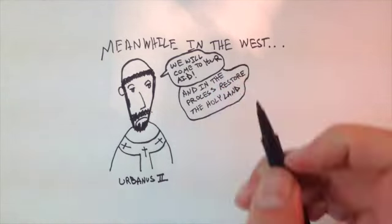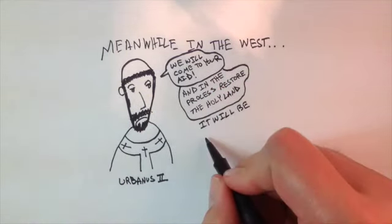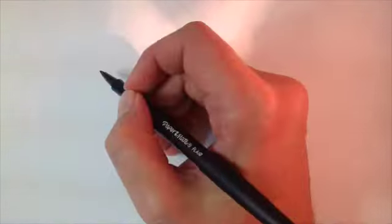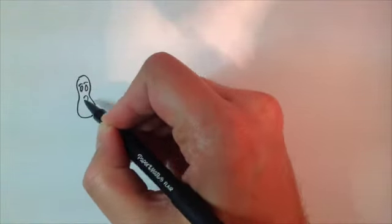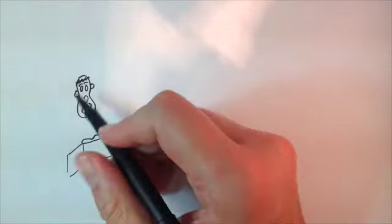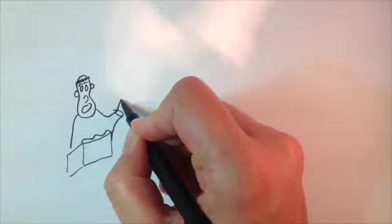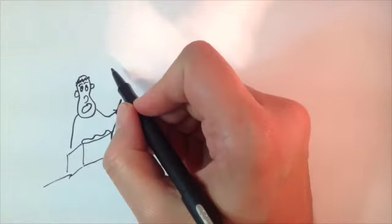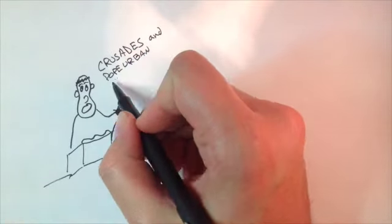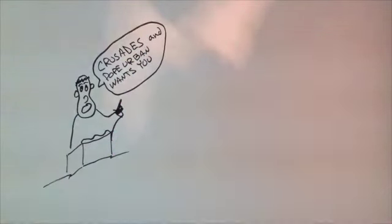Urban II envisioned the crusade to be a noble cause with noble knights fighting in service to the church and God. However, the fervor of the preaching for the First Crusade was so great, combined with the promise of martyrdom and money, it attracted not only the noble soldiers, but also the peasants, murderers, brigands, and generally the rotten evil people in society.